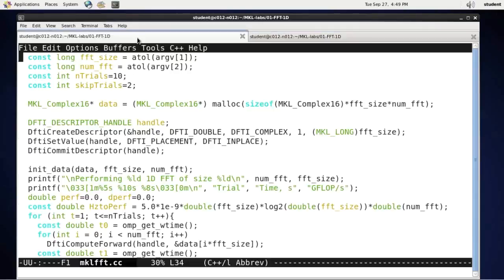The code that I have takes the FFT size from the command line, and I will set it equal to 2048. Also from the command line, it takes the number of transforms that I have to transform at once, and I will set it to 200,000.